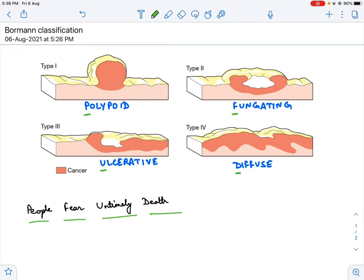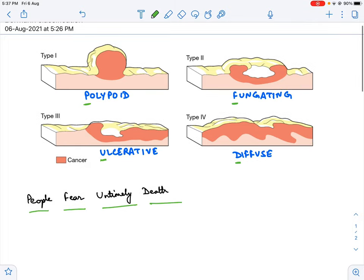Now this diffuse gastric cancer is also called linitis plastica when it is seen in signet ring cell cancer. So, very simple mnemonic: people fear untimely death, PFUD.